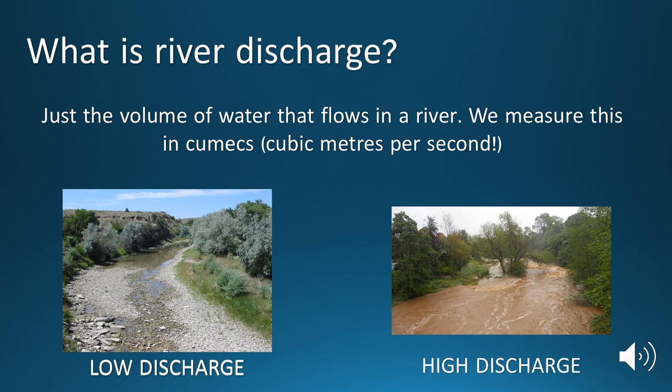So a river that's in a low discharge would be something on the left hand side. You can clearly see that this riverbed, this river channel has dried up. We can see the riverbed. There isn't as much water within the river channel so we can clearly say that's got a low discharge. There isn't going to be many cubic metres of water flowing past you per second in this channel.